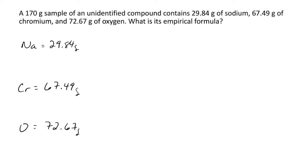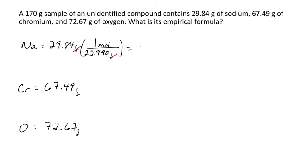Our next step is to convert from grams to moles using molar mass from the periodic table. For sodium, we have 22.990 grams per mole. Crossing out grams and leaving moles, we have 1.298 moles of sodium.